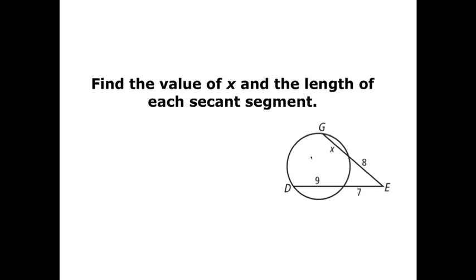All right, here we're going to use our secant rules, and remember our secant rules say to take the piece of the secant that's outside the circle times the whole secant. And that product is going to equal the same as the other secant, the piece of the secant outside the circle, in this case 7.